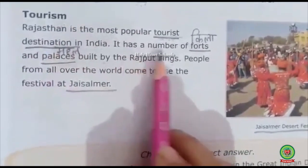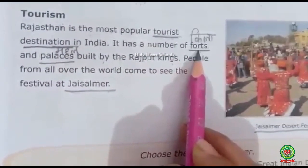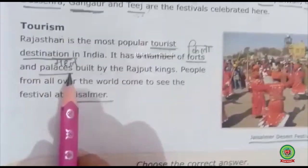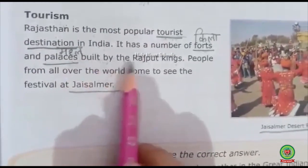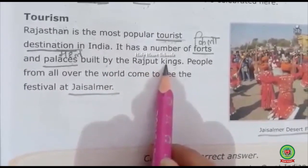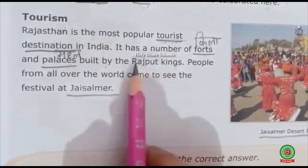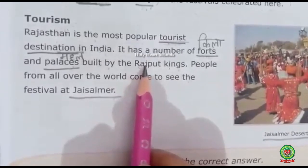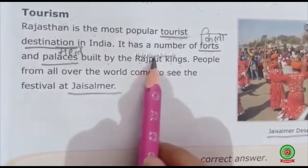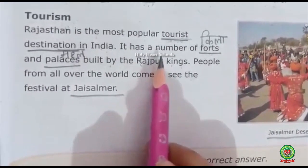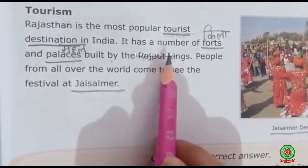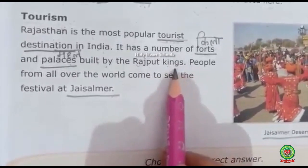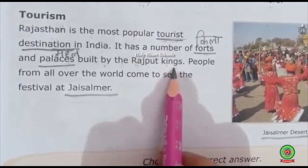Rajasthan has a number of forts — 'Killa' — and palaces — 'Mahal' — built by the Rajput kings. Some famous forts include Mehrangarh Fort, Ranthambore Fort, and more forts and palaces built by the Rajput kings in Rajasthan.